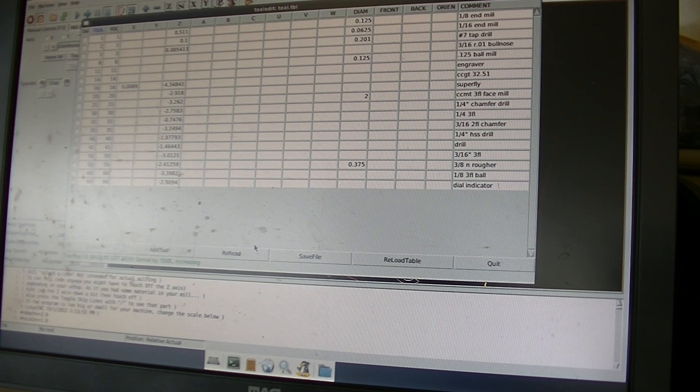Alright. The next one in here, tool 60. Let's see. I came up with negative 3.39. There's only a tenth difference here. It's probably less than the machine can actually detect.